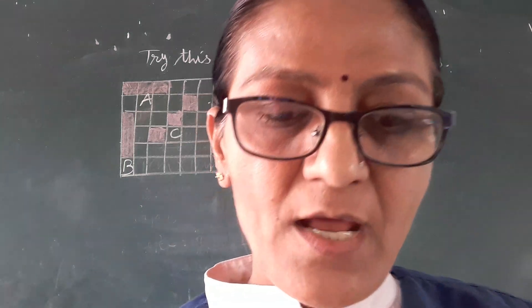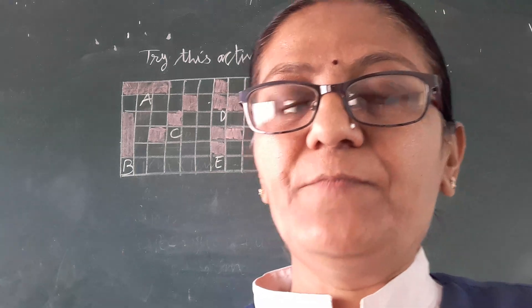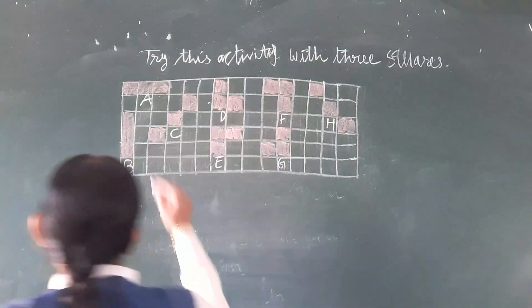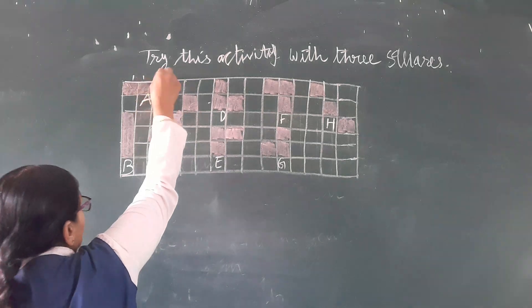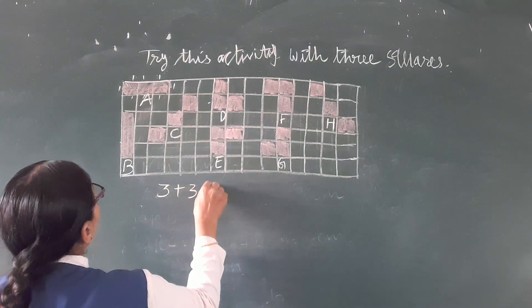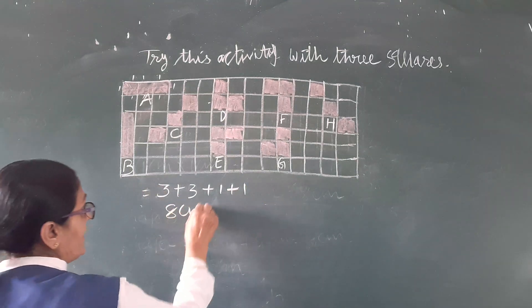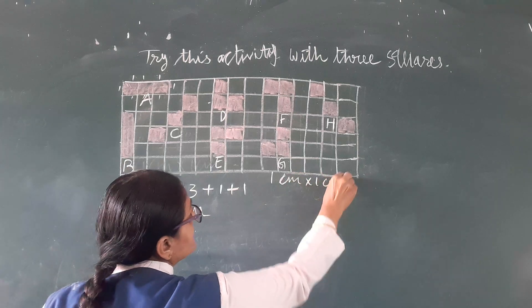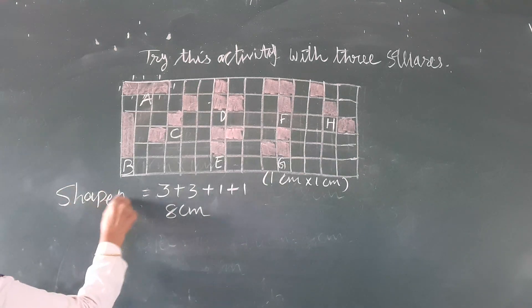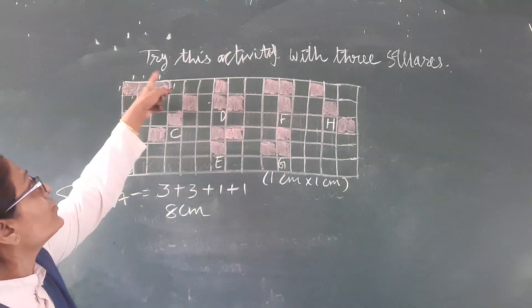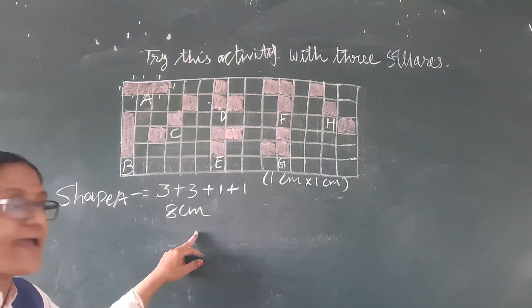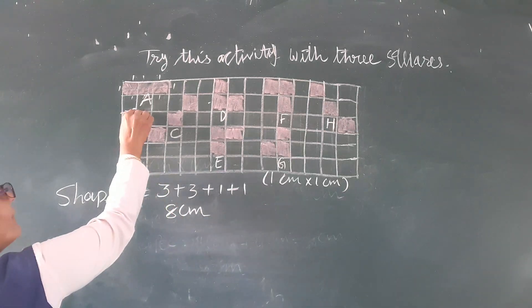Now we calculate the boundary length of each shape. For shape A: counting the sides — 3 plus 3 plus 1 plus 1 equals 8 cm. Here also 1 cm plus 1 cm is there. Shape A boundary equals 3 plus 3 plus 1 plus 1, which means 8 cm is there.